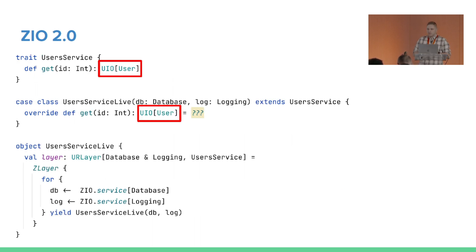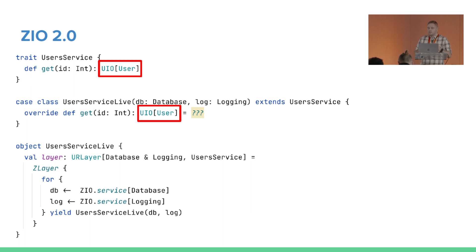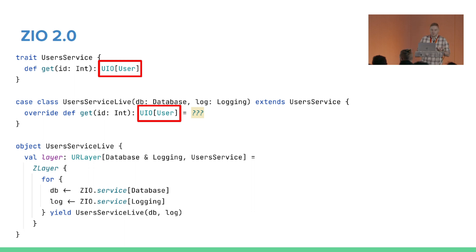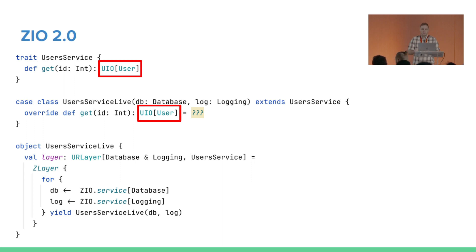When ZIO2 came along, there was a little bit of a change in direction in how we were encouraged to create services. We said that dependencies that are global in nature — things that have the lifetime of the entire application — they should not go into the R parameter; they should go into the constructor arguments of the function. So essentially your traits become simple traits, you implement them using regular case classes, and you wire them using layers, pulling all dependencies from layers.